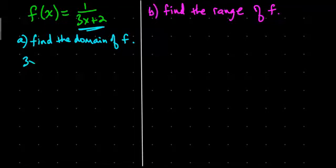So that is, we need 3x plus 2 to not be 0. Okay, and now you just simply solve for that x. Subtract 2 from both sides, 3x is not equal to negative 2. Divide out by the 3, and we get x is not equal to negative 2 thirds.